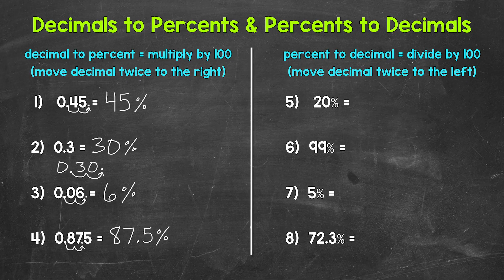Now let's move on to numbers five through eight, where we're going to go from percents to decimals, starting with number five — 20%. We're going to go the opposite way from before: instead of multiplying, we're going to divide by 100. A quick way to divide by 100 is to move the decimal twice to the left.